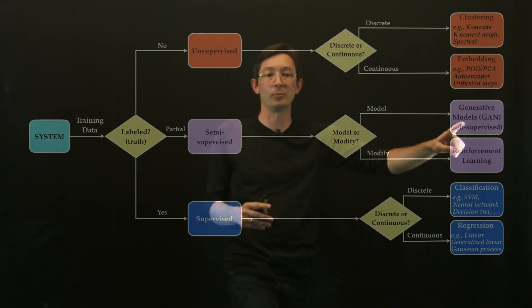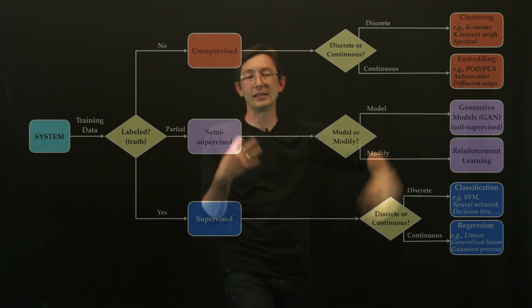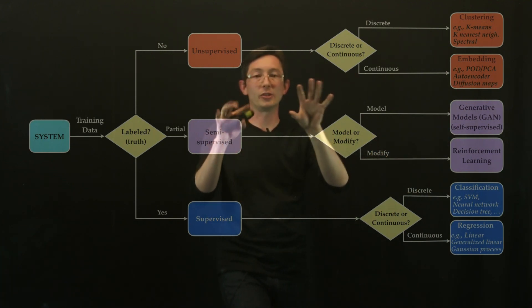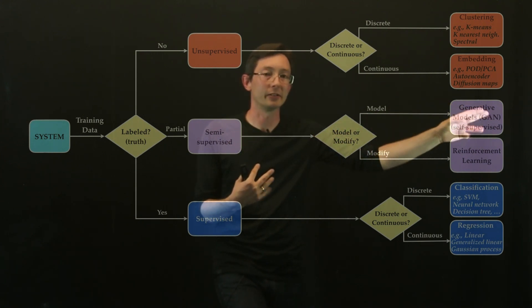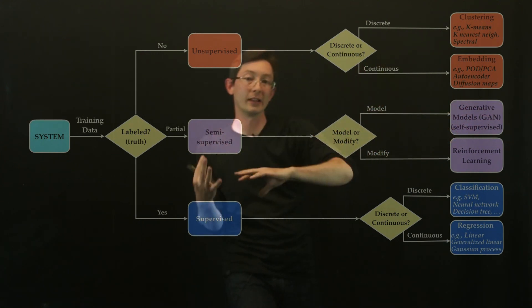And so this is actually called self-supervised because in some sense this has two machine learning algorithms that kind of are constantly fighting with each other in this adversarial fashion. One is kind of supervising the other.